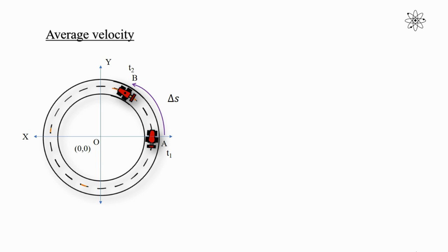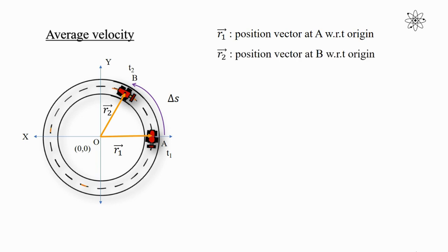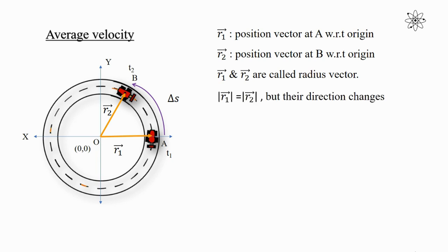Now for the same situation, let's find the displacement. For that we need to draw position vectors. Let vector r1 be the position vector at A with respect to the origin, and vector r2 be the position vector at B with respect to the origin. The direction of a position vector is away from the origin. In circular motion, position vectors are also known as radius vectors — vectors whose magnitude is the same but whose direction changes. As you can see in the diagram, the direction of the radius vector at position A and at position B are different, but their magnitudes are the same.